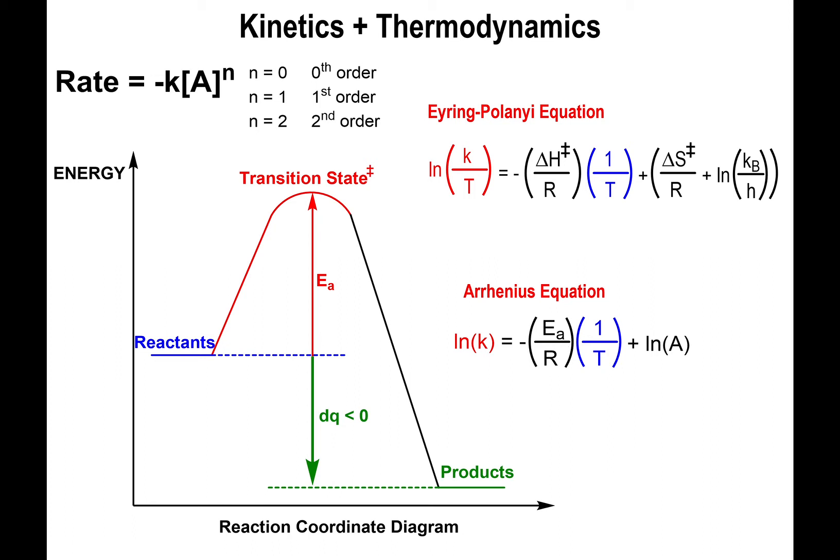Instead of activation energy or enthalpy or entropy of reaction, you get the enthalpy at the transition state, the top of the hill and the activation energy, and the entropy at the transition state along with some constants.